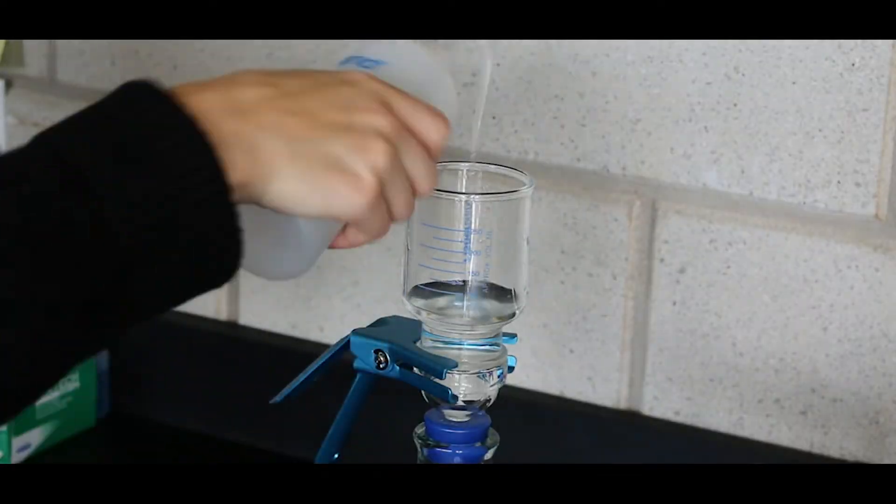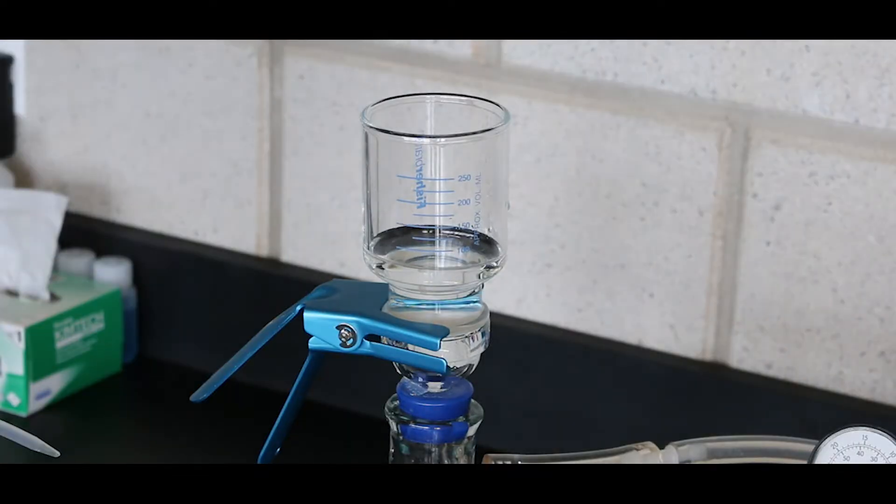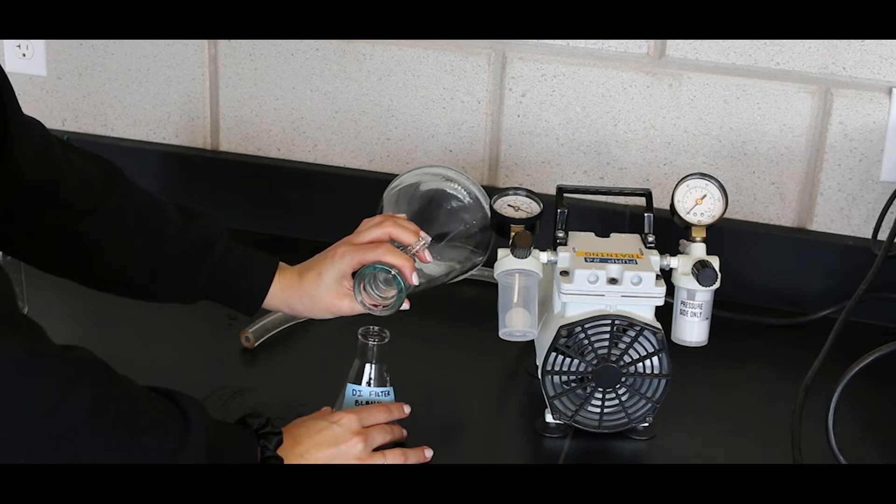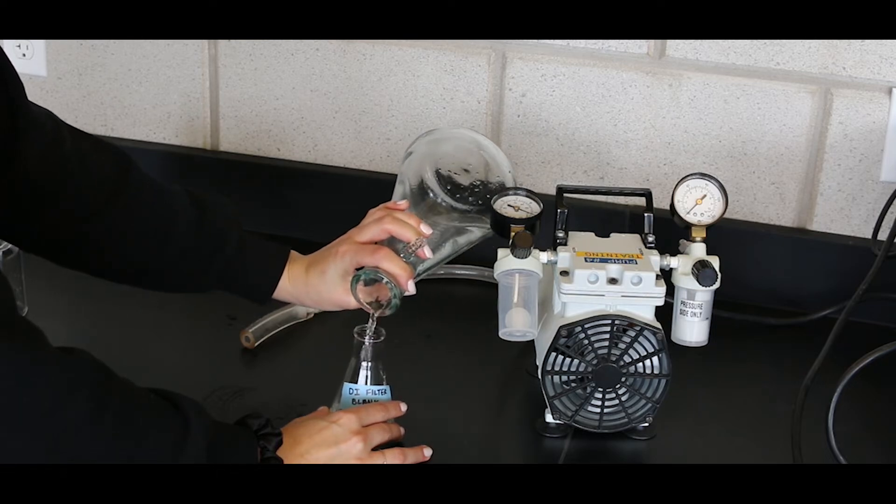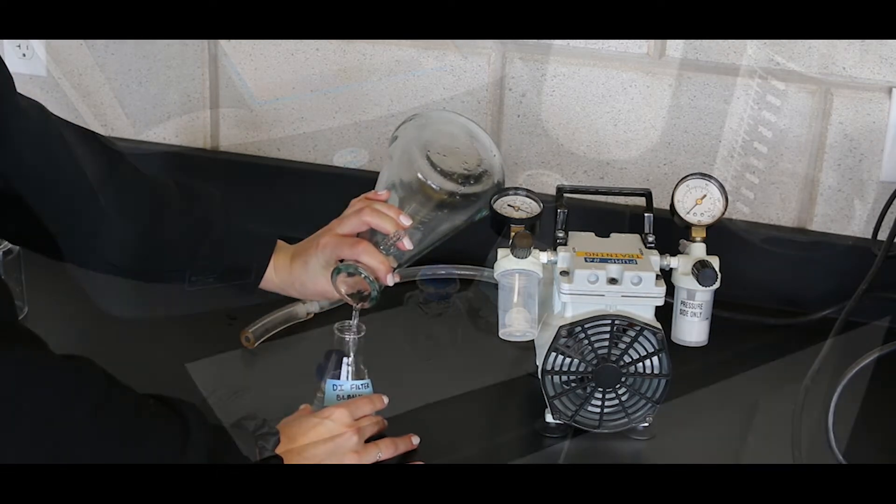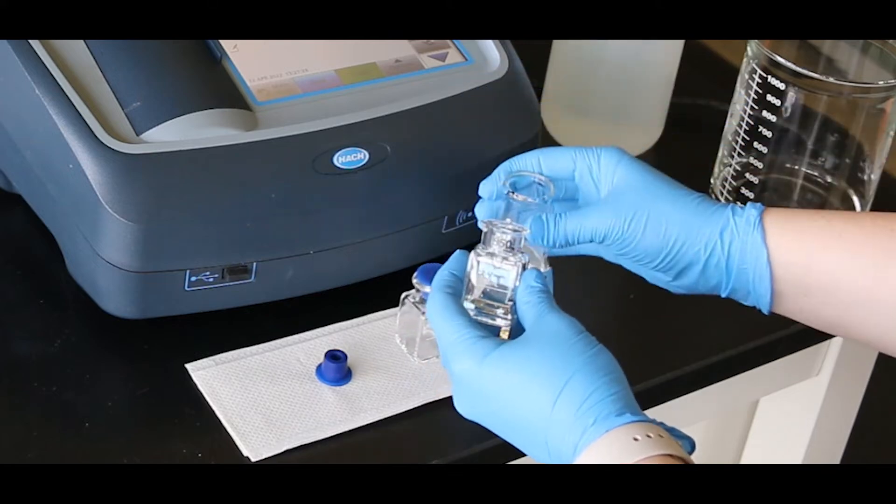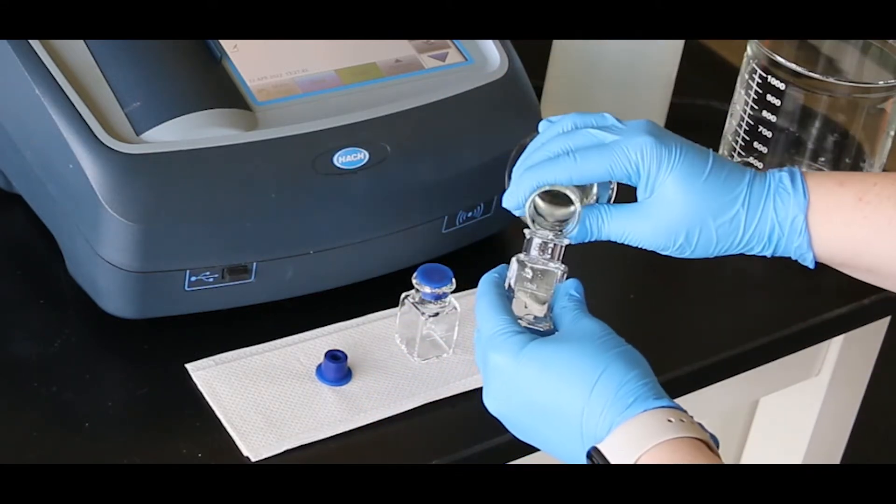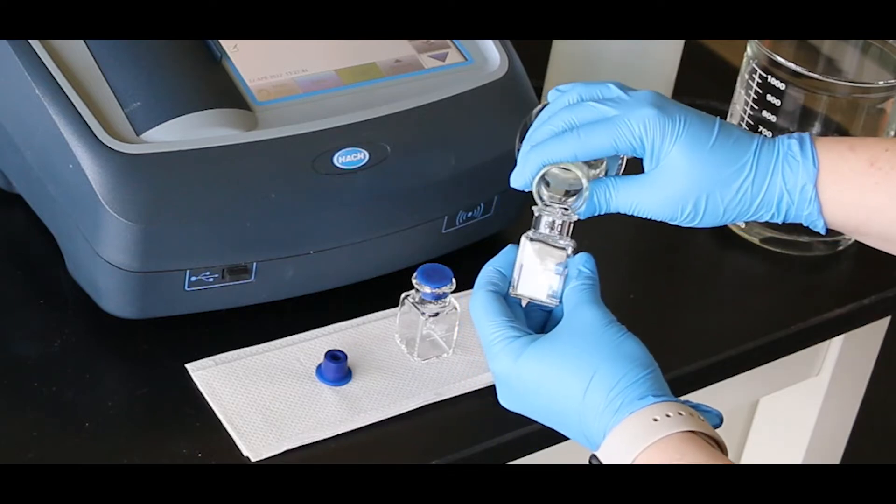Repeat this process with another approximate volume of 100 milliliters of deionized water, but save the filtered deionized water as a filter blank in a clean flask. Some water quality parameters require you to zero instruments using the filter deionized water for quality control purposes.